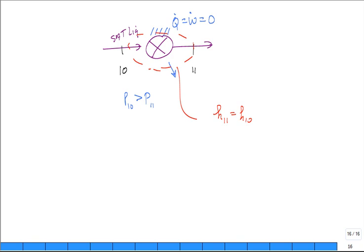Thumbs up. Yeah. So this state right here, this enthalpy at state 11, it's just this enthalpy at state 10 for a steam trap. Make sense?